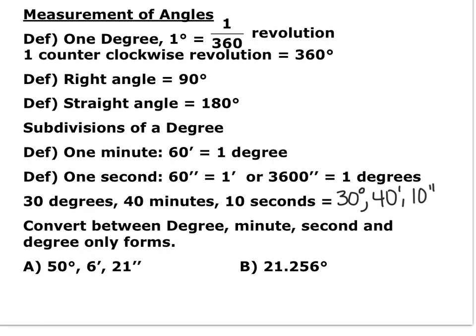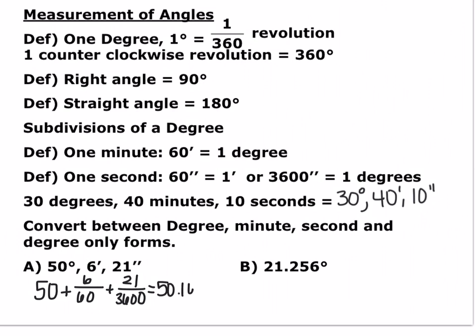We want to convert between just degrees and degrees-minutes-seconds, which are subdivisions of degrees. We have 50 degrees, 6 minutes, and 21 seconds, and we want to write that as just degrees. Since 6 minutes is 6/60 of a degree and 21 seconds is 21/3600 of a degree, plugging this into your calculator gives 50.105 degrees.